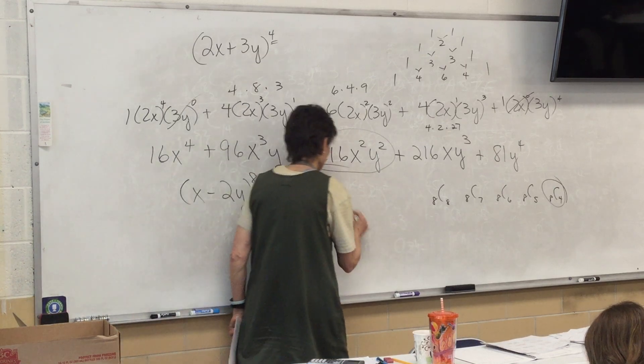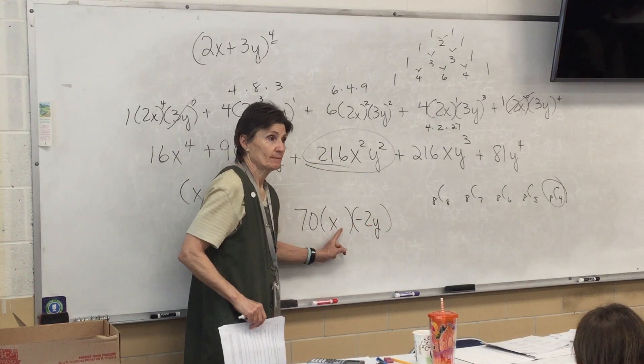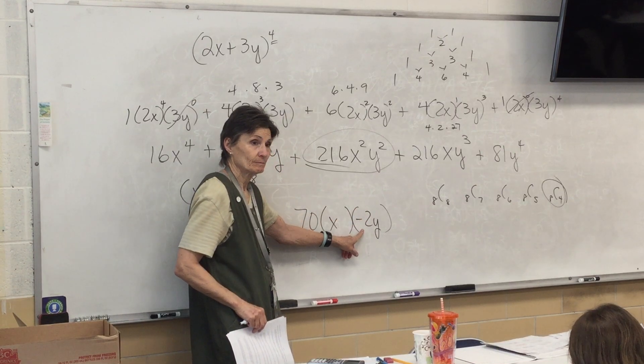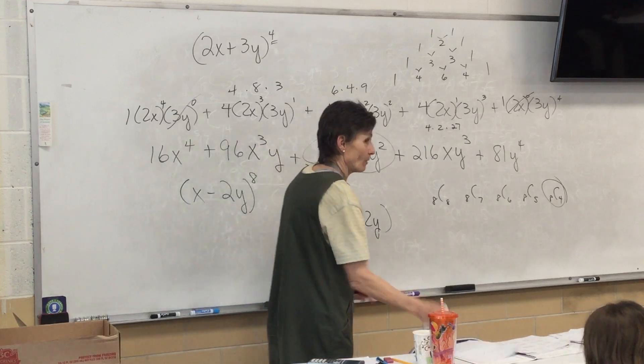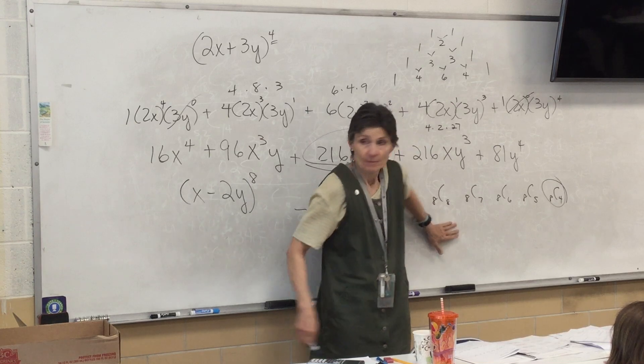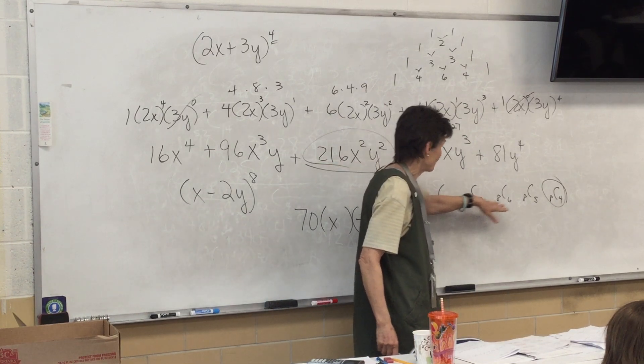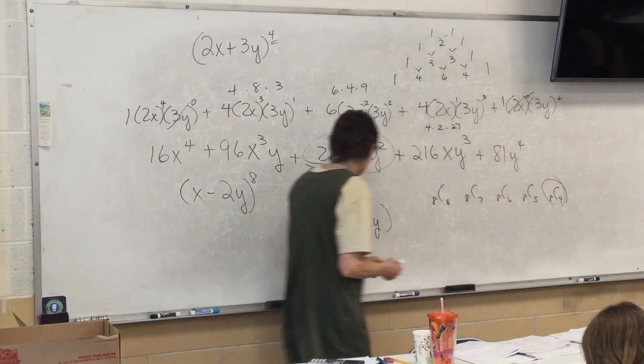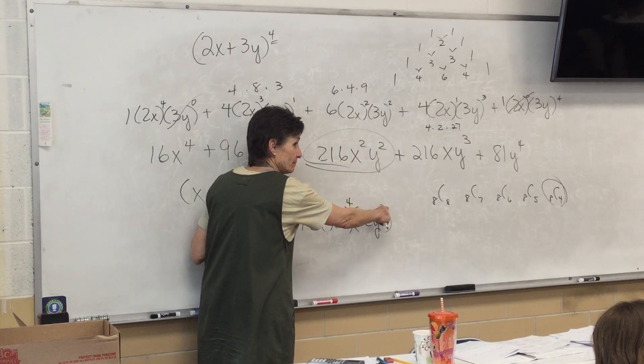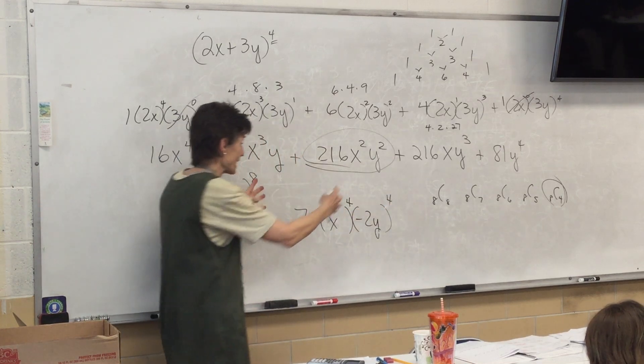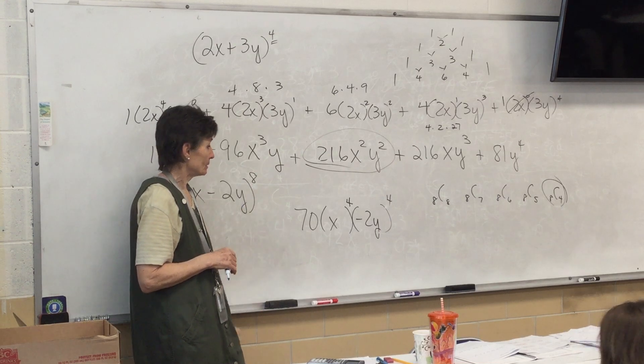Now, next to the 70 is going to go an X and a negative 2Y. Boys and girls, this is not a subtract. This is a multiply. We're multiplying by a negative. So, this is going to be X to the 4th. Which automatically means that this one is also a 4th. Because in any grouping here, in any term, the powers have to add up to that.